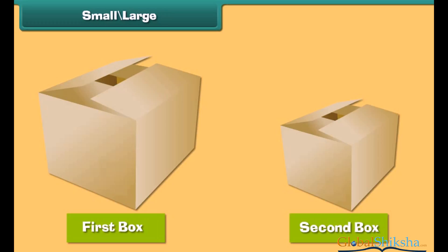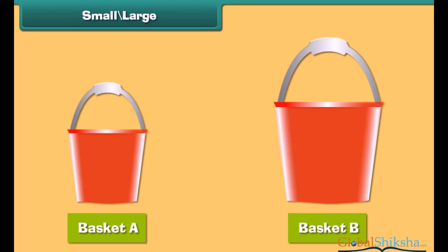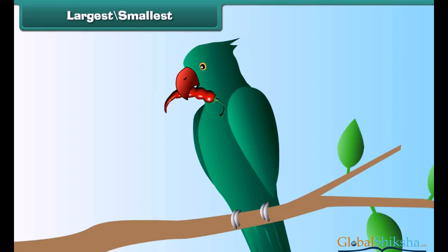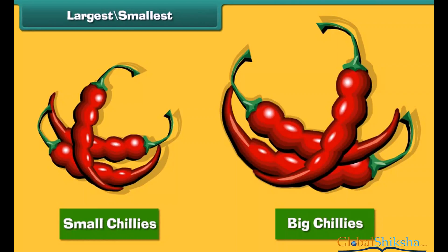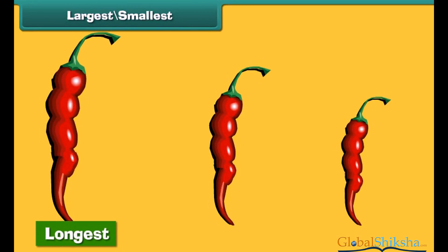When two things are not of the same size, we compare them. We use the word 'small' with the object which looks shorter, and the word 'big' with the object which is larger. Basket A is shorter. A parrot eats red chilies — there are small chilies and big chilies. Among three chilies, the first is longest and the third is smallest.